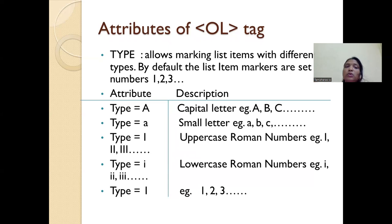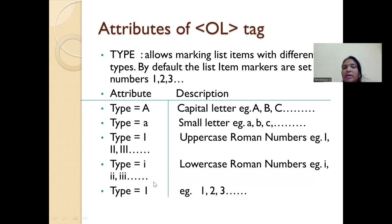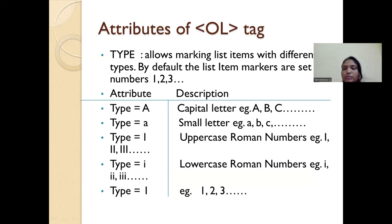You can also use other types of list. To specify other types — say for example Roman numbers, or maybe A, B, C, D in capital letters, or in lowercase, or in Roman numbers — by default it is 1, 2, 3. If you wanted to change the type of the number list, you can use the attribute called type. I will show you.